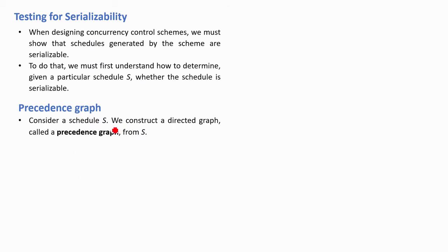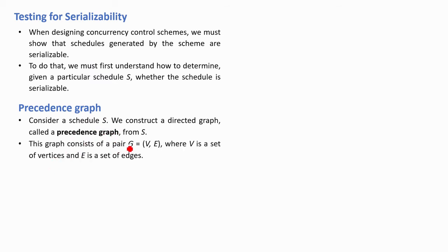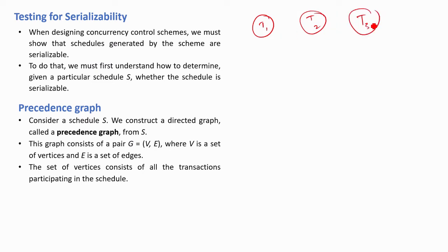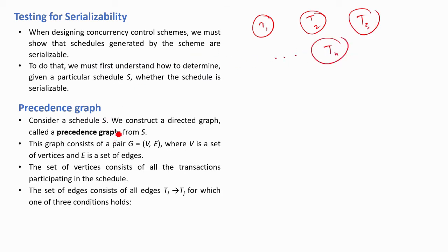Consider a schedule s. We construct a directed graph called a precedence graph from schedule s. This graph consists of a set of vertices V and a set of edges E. The set of vertices consists of all the transactions participating in the schedule. So if there are three transactions, there are three vertices, and if there are n transactions, there will be n vertices.